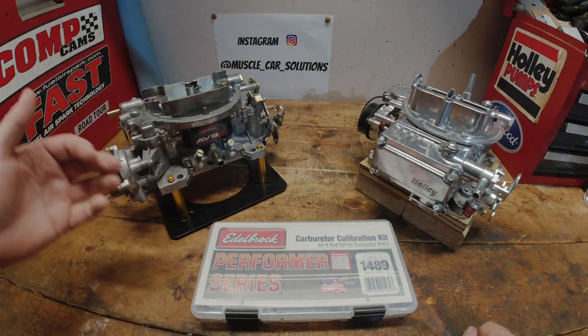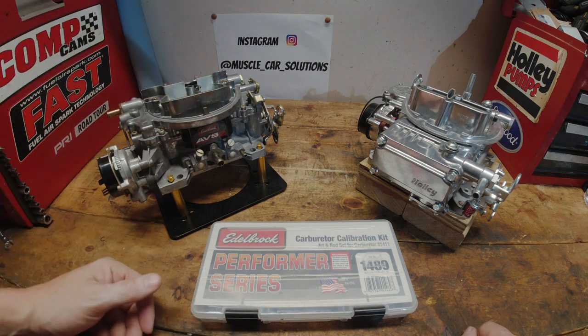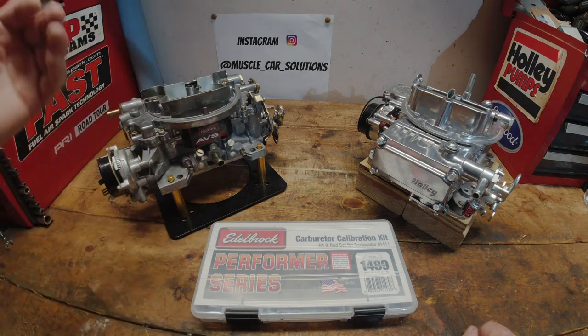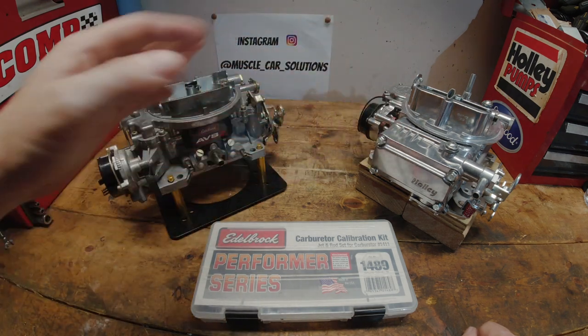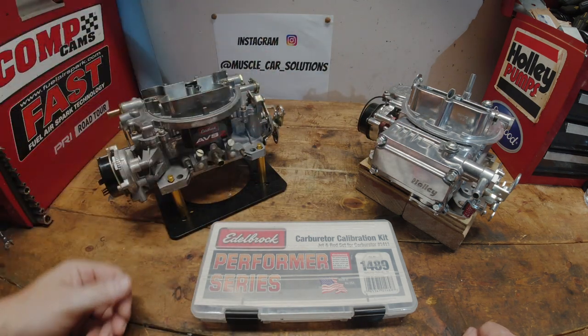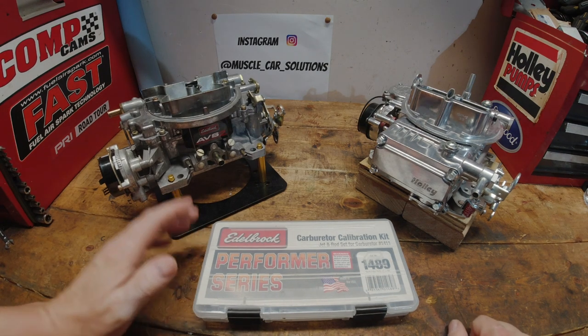When you get ready to head back home and you're going down in elevation, down to where Denver's at at that 5,280, then you can reset the timing and the jets and the carburetor rods, metering rods, whatever type of carburetor you're tuning to get to where you need to be.